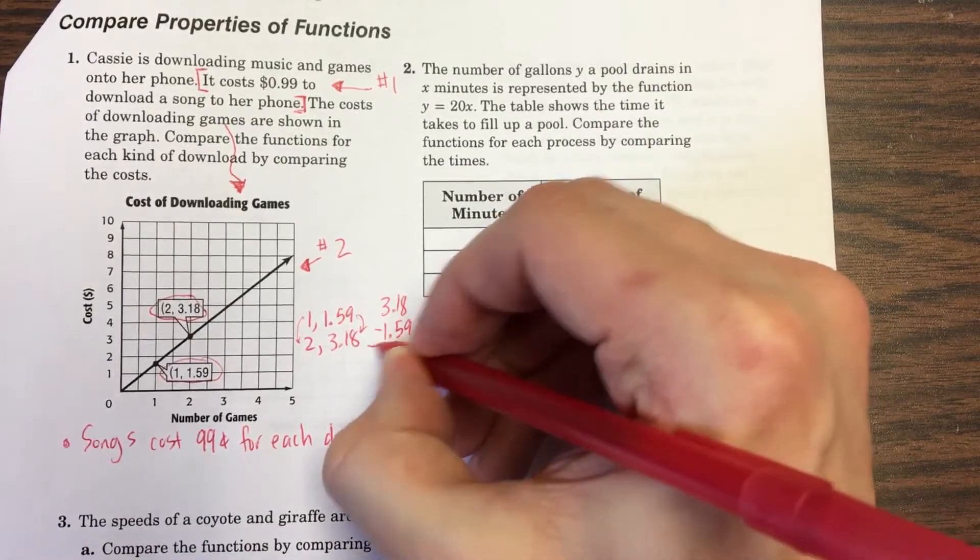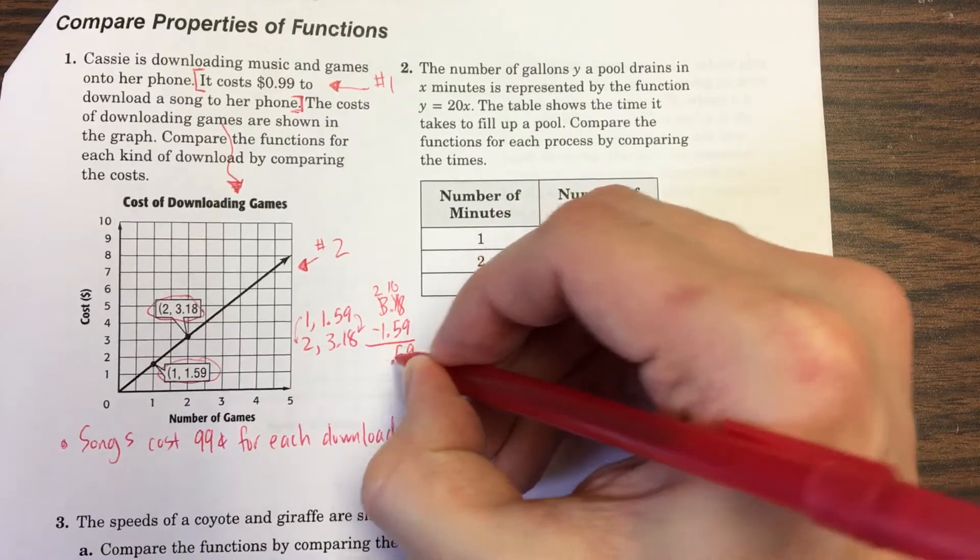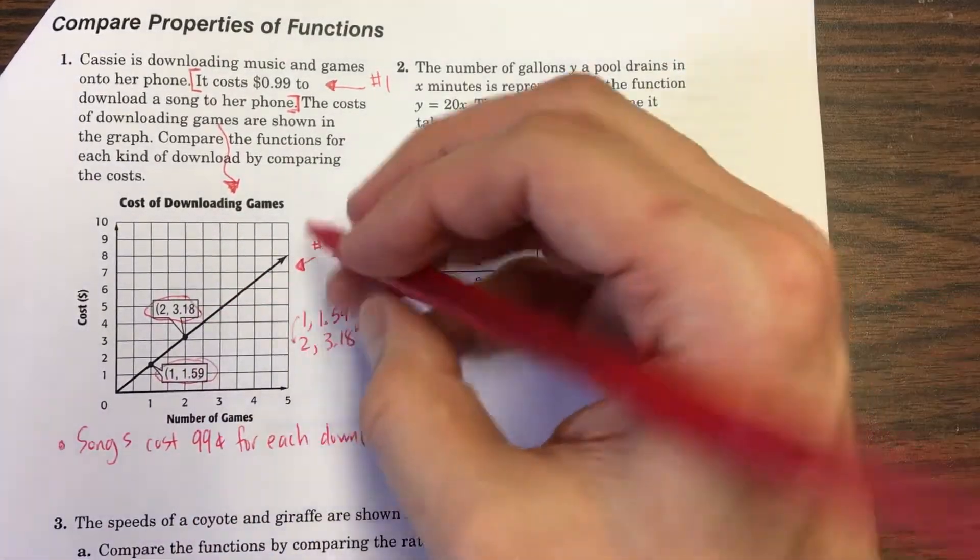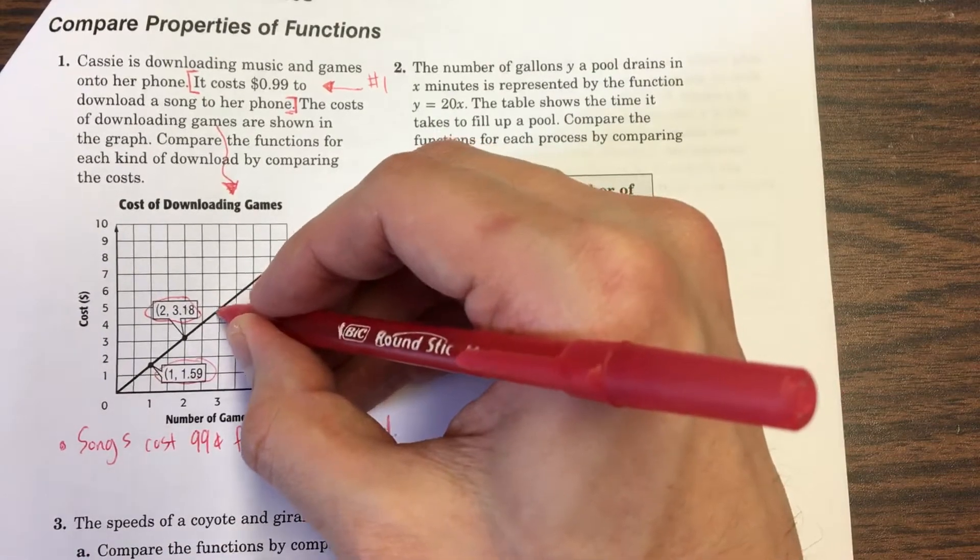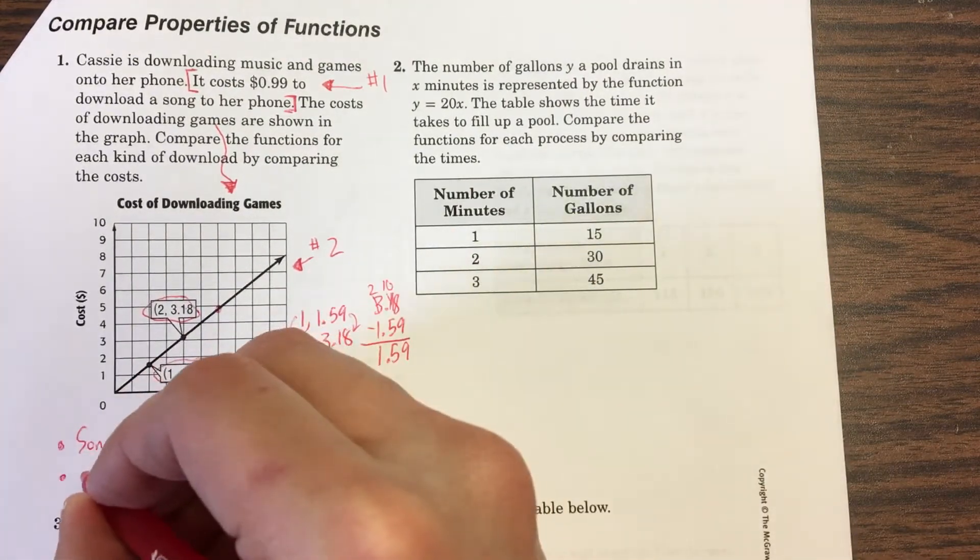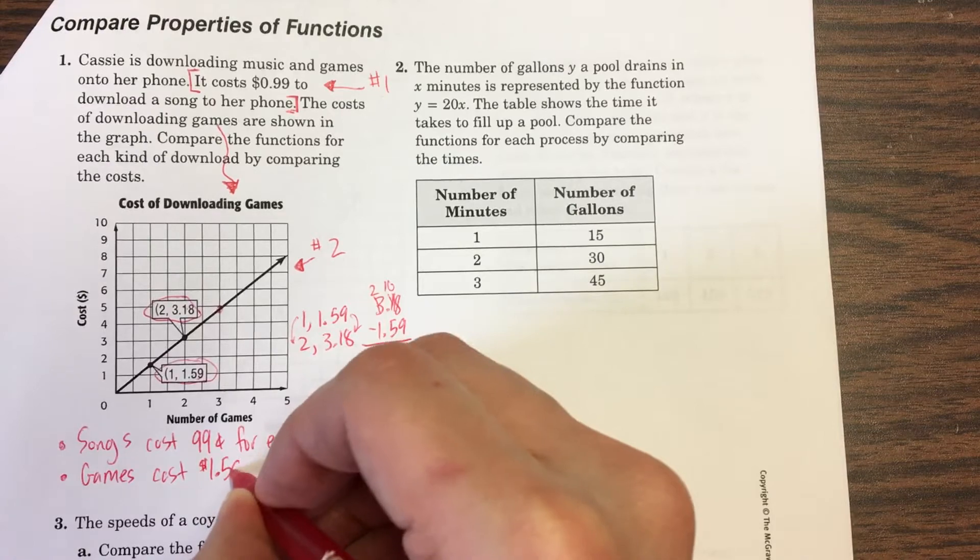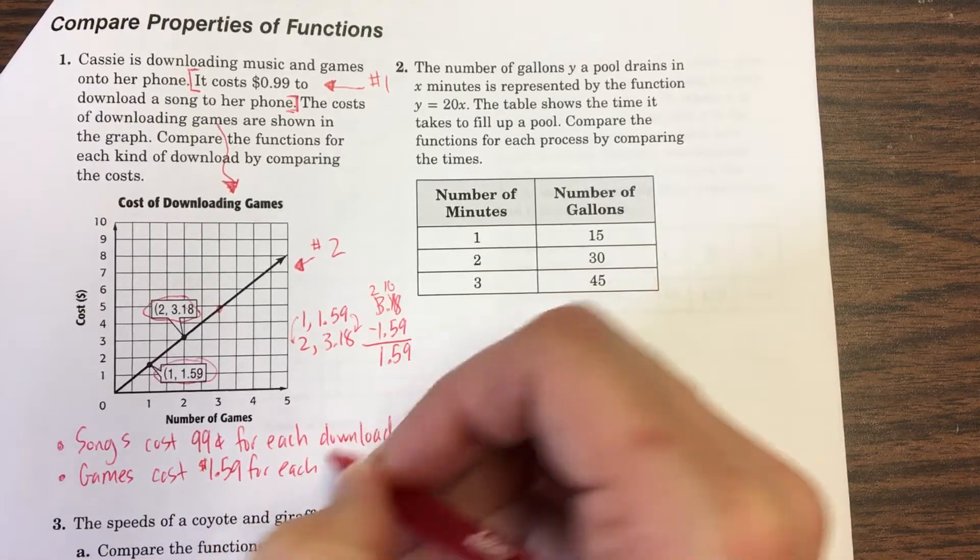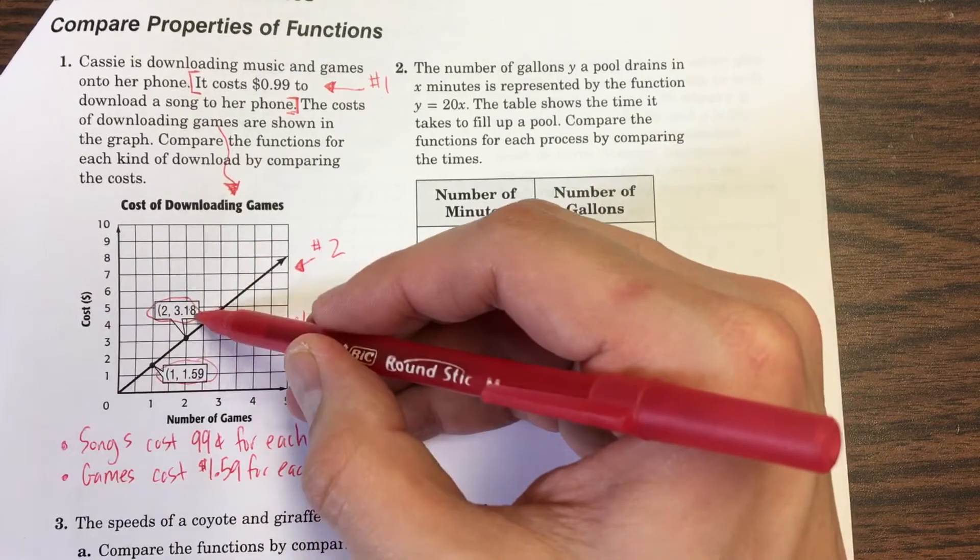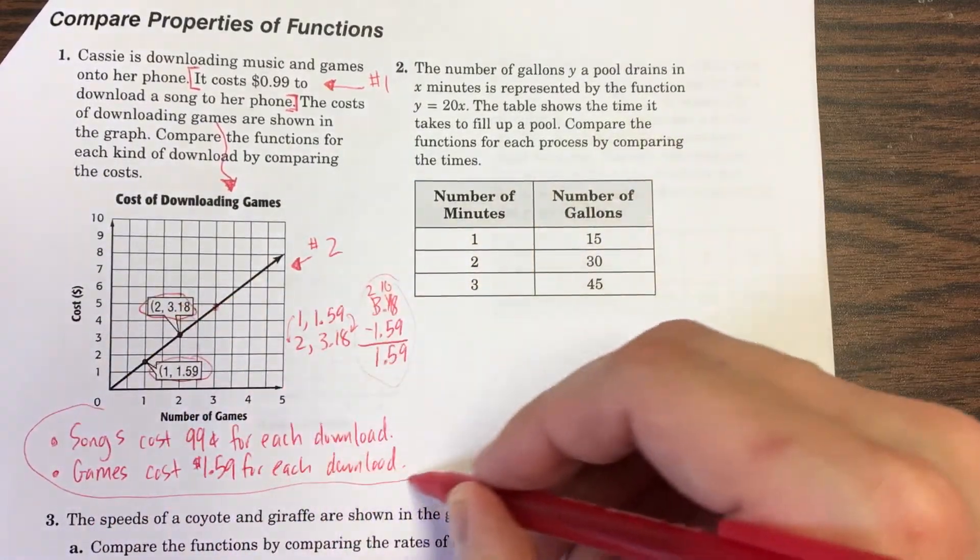Situation number one was the one that was a little bit harder to find. It was hiding up here. 99 cents to download a song to her phone. So I'm just going to say songs cost 99 cents each, 99 cents for each download. Pretty straightforward. 99 cents for each song. And then what about the games? The games is going to be a little bit trickier. One game costs $1.59. Two games costs $3.18. How much money has the price increased by? If I subtract this, this is going up by $1.59. So every single time it goes up by $1.59. And that's going to give me an indication that for my games, I should say games costs $1.59 for each download. I just tried to find the pattern from one to two. Okay, there's number one. This is actually my answer. I just had to describe each one.